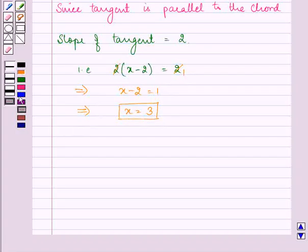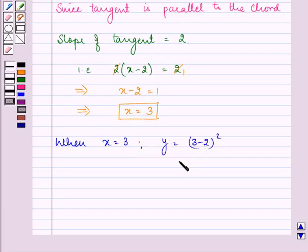So when x is 3, the value of y is (3-2)², that equals 1² which equals 1.